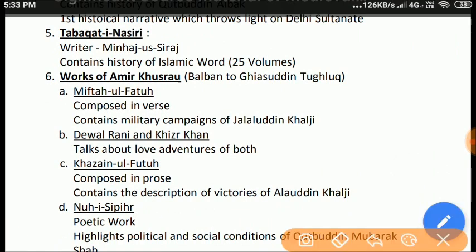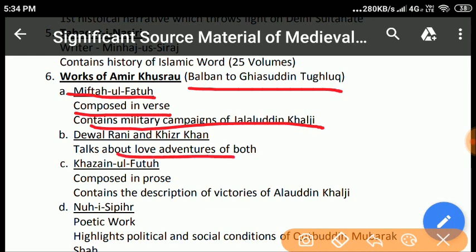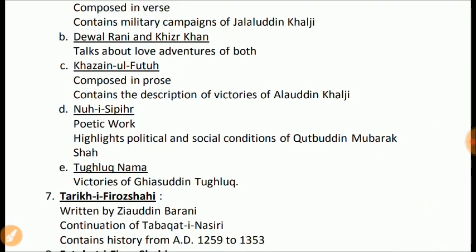Works of Amir Khusro: Amir Khusro adorned the courts of all Sultans from Balban to Ghiyasuddin Tughlaq. His major works include: Miftah-ul-Fatuh, composed in verse, containing all the military campaigns of Jalaluddin Khilji; Deval Rani and Khijra Khan, describing the love story of Khijra Khan and Deval Rani; Khazain-ul-Fatah, written in prose, containing descriptions of the victories of Alauddin Khilji; Nuh-e-Sipihr, a poetic work containing the political and social conditions of the reign of Qutb-ud-Din Mubarak Shah; and Tughlaq Nama, a masnavi containing the victories of Ghiyasuddin Tughlaq against Khusro Khan.